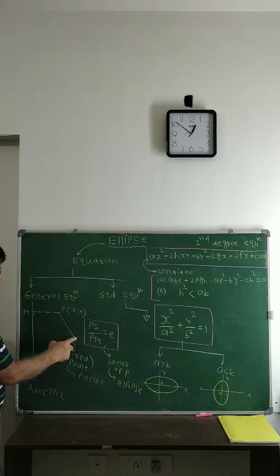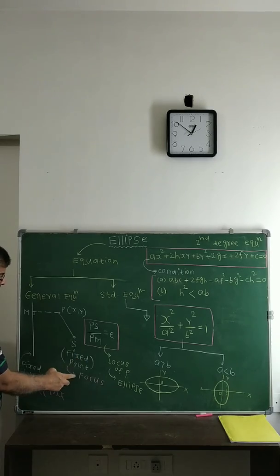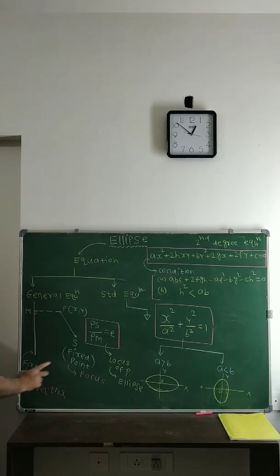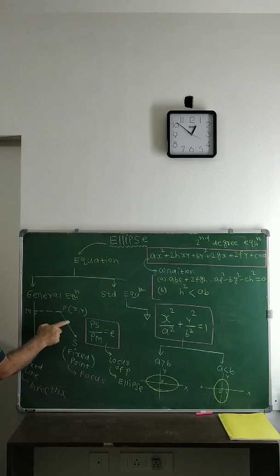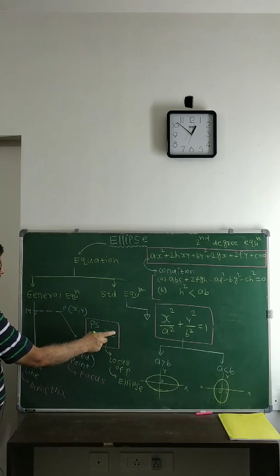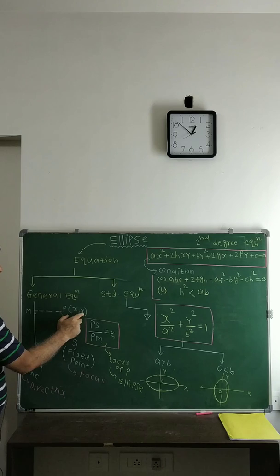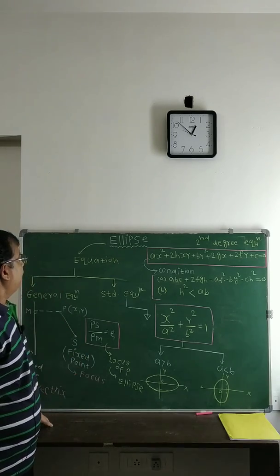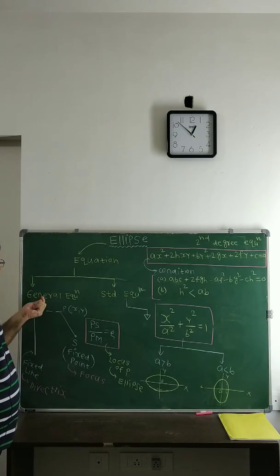So S is the fixed focus and the fixed line is the directrix — the same concepts we used in parabola. We use the distance formula to calculate PS, then calculate the perpendicular distance PM from point P to the directrix. Setting PS divided by PM equal to e, with e given in the question, we find the equation in x and y. This x and y equation becomes the locus of P and thus the general equation of the ellipse.